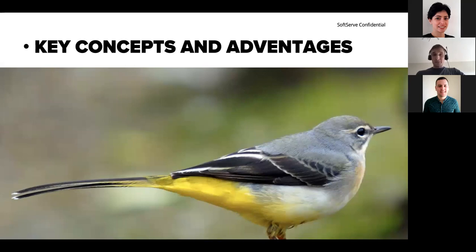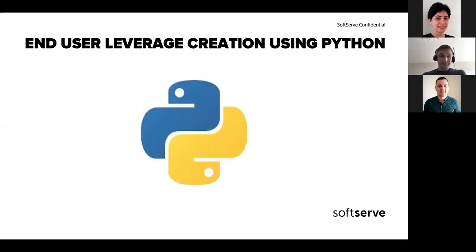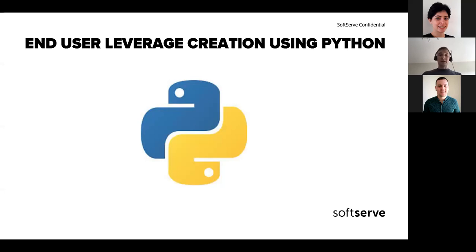Going into key concepts and advantages — the objectives of Wagtail are divided into two parts. One is system construction, which is almost all done with Python. The second is content management, a role for editors and people who write text, documentation, or copy. For the first part, we build with Python because we can leverage creation using Python. After working with big CMS frameworks, clicking through all the options, settings, and configurations gets overwhelming. That's why they encourage people to use Python to create the tool.